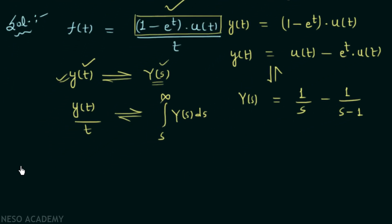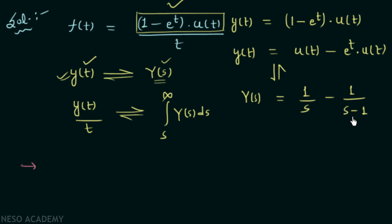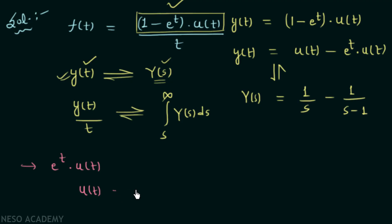Now let's explain how we obtained 1/(s-1) as the Laplace transform of e^t multiplied by u(t), using the frequency shifting property. If we have a time domain signal u(t) with Laplace transform 1/s, then when you multiply the time domain signal by the exponential e^(at), the Laplace transform changes to 1/(s minus a).